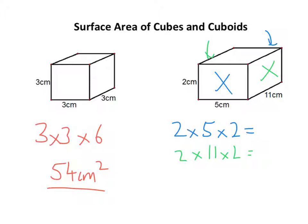And if I look at the top here, right there, that's going to be five times eleven. And again, the one underneath is going to be the same, so there's two. So, I've got to work all these out.